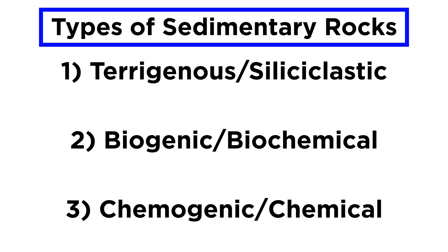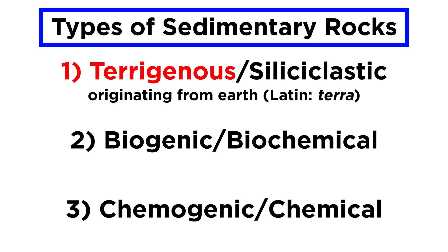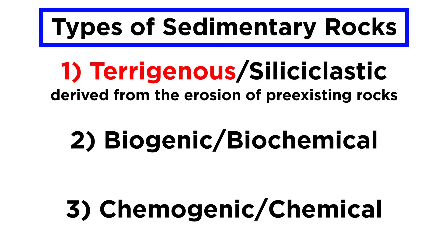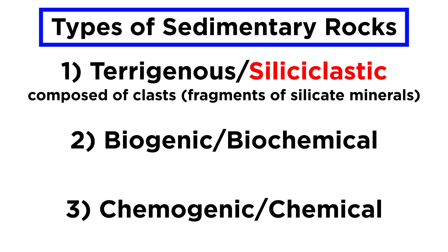Sedimentary rocks are grouped into three primary categories: terrigenous or siliciclastic, biogenic, and chemogenic. Terrigenous, which literally means originating from earth — from the Latin terra — refers to materials derived from the erosion of pre-existing rocks. Siliciclastic refers to materials composed of clasts, or fragments of silicate minerals.